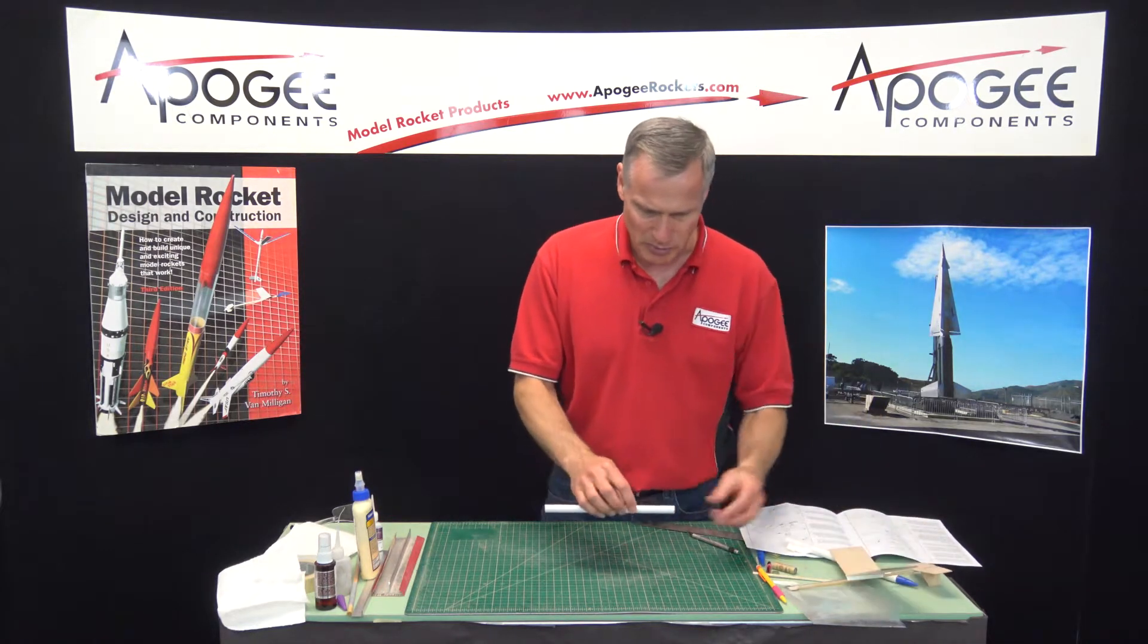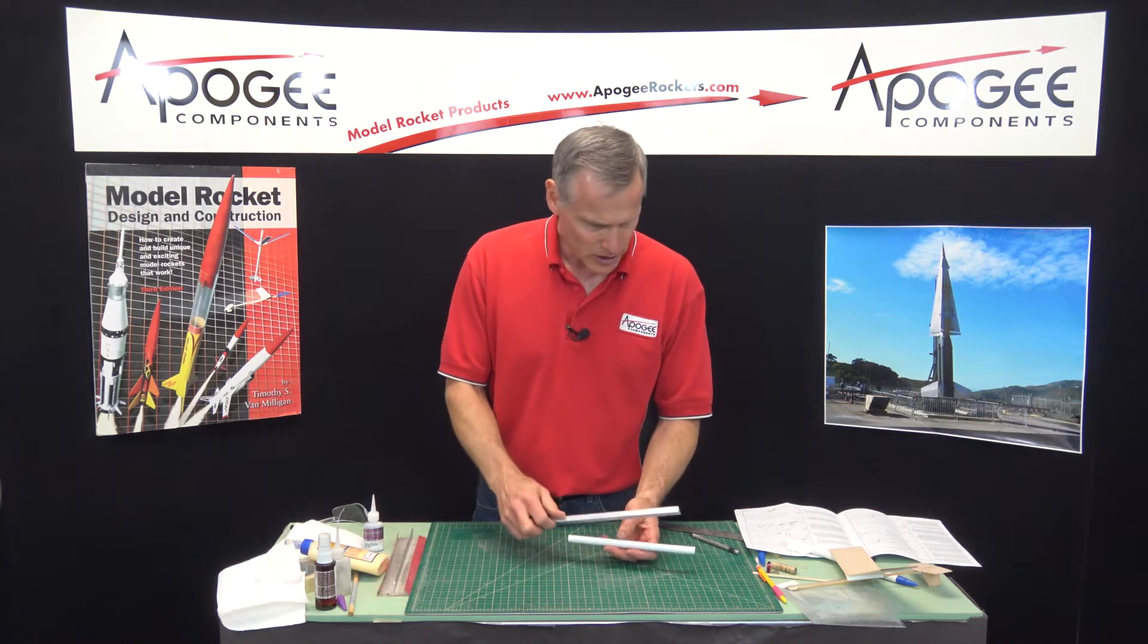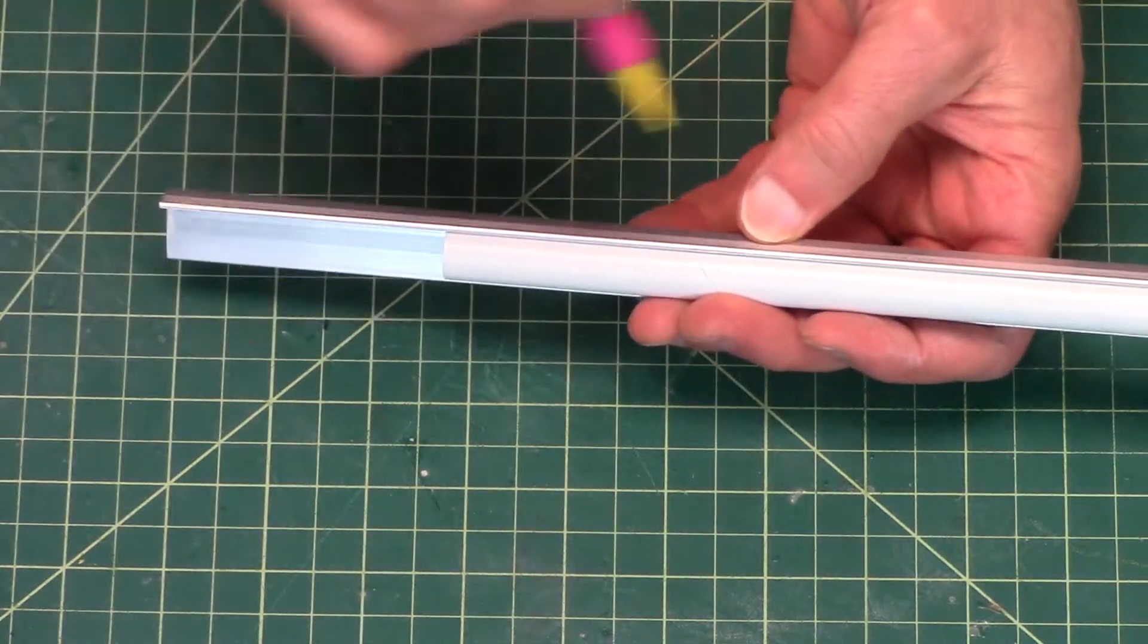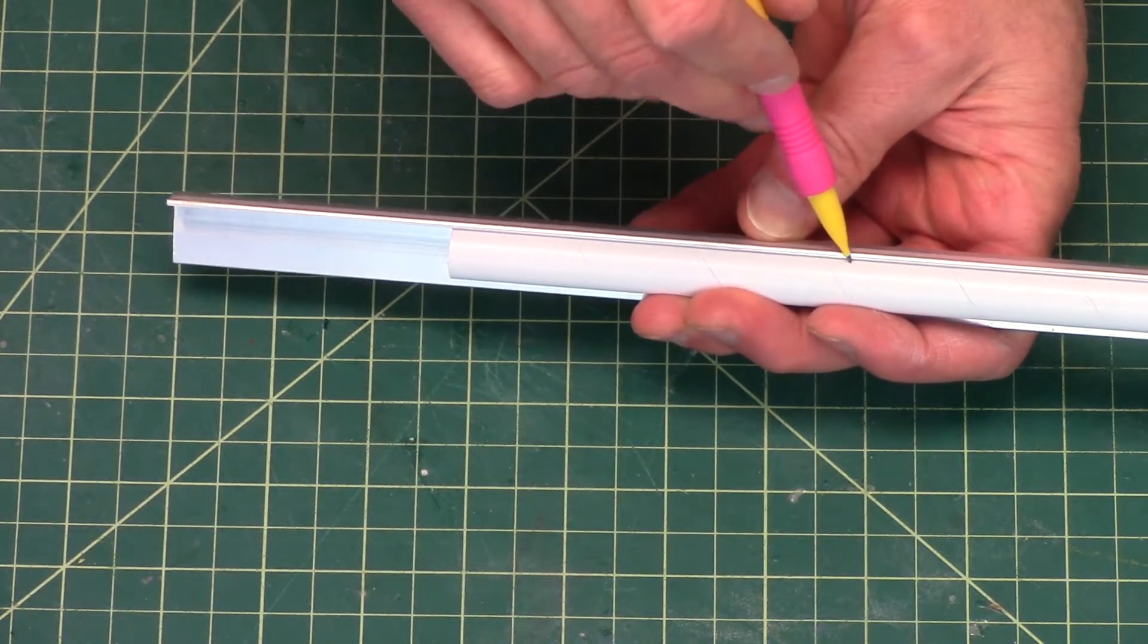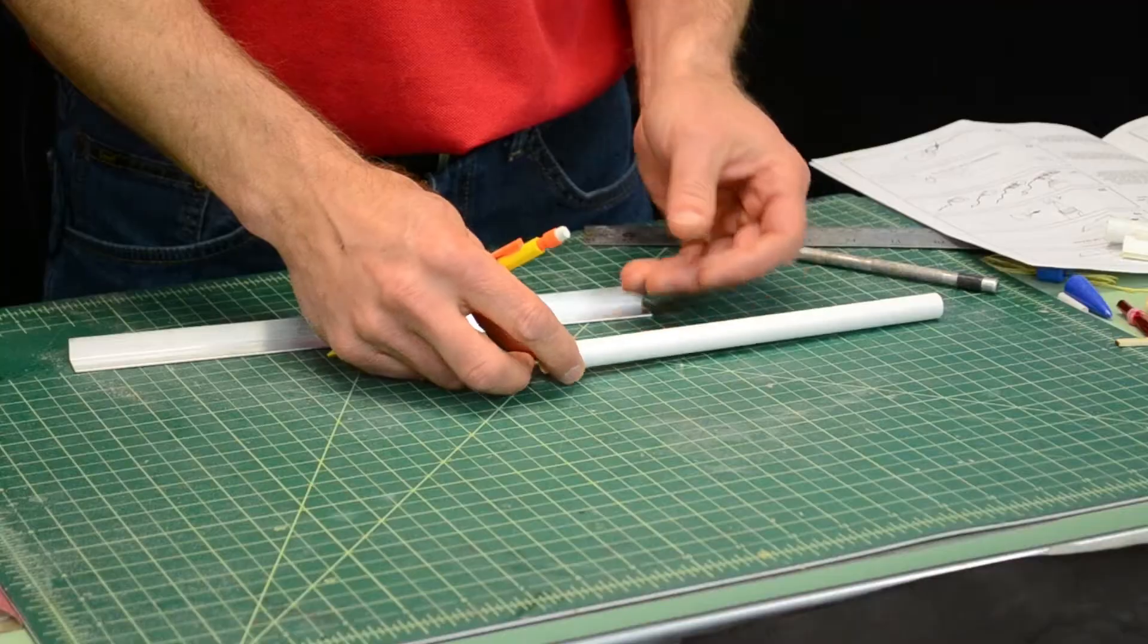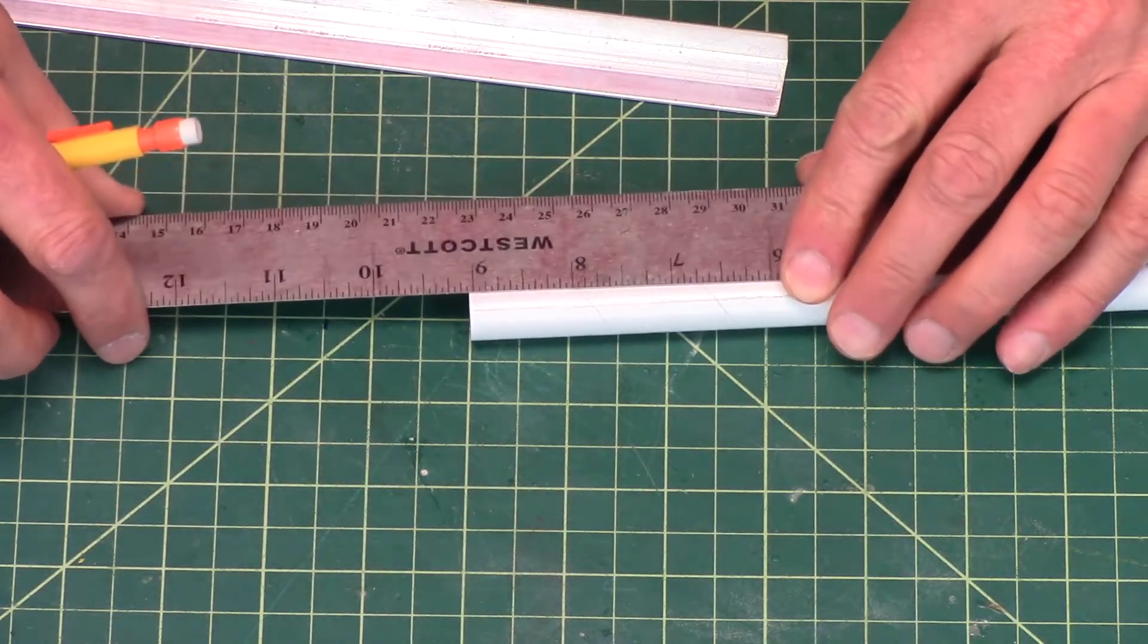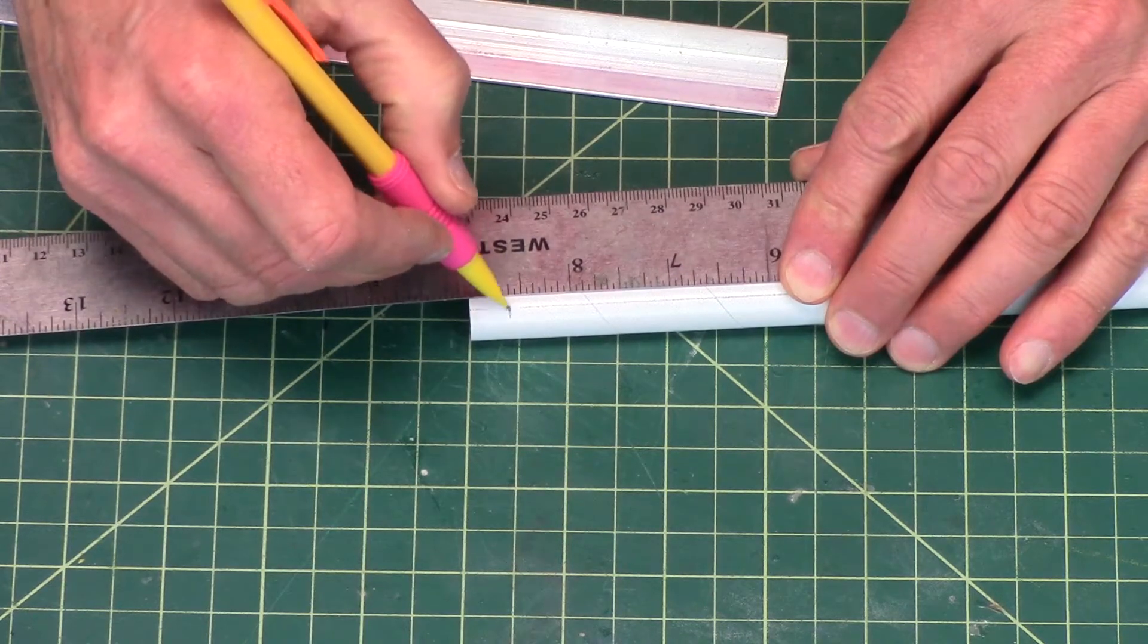To start this step, we want to take the body tube and draw a line down the side, and I use an aluminum angle for this. A lot of people use a door jamb, but an aluminum angle or the Estes Ultimate Tube Marking Guide will work just as well. I'll just draw a line down the side like that, and then I want to measure 3 1/8 inch from the bottom end. So there's 1, 2, 3 1/8 inches approximately right there.